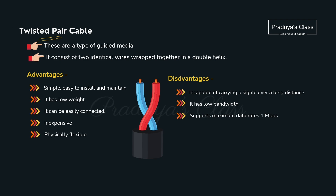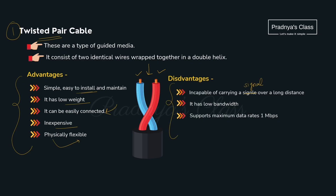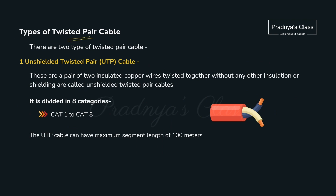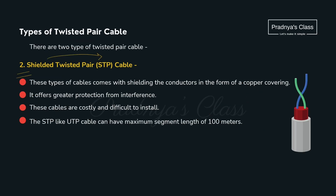The first guided medium is twisted pair cable. It consists of two identical wires twisted together. Advantages: it is easy to install, low in weight, easily connected, inexpensive, and flexible. Disadvantages: it is not capable of carrying a signal over a long distance, has low bandwidth, and supports a data rate of 1 Mbps. There are two types — unshielded (copper wire without insulation) and shielded twisted pair cable (conductors shielded with copper wiring, providing protection from interference, but costly and difficult to install).